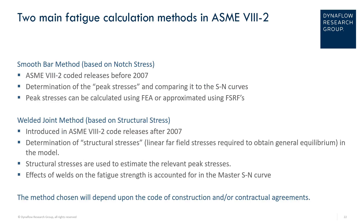This slide introduces the two main fatigue calculation methods in the ASME boiler and pressure vessel code section 8 division 2. The first is the smooth bar method, which is based on the notch stress. This is relevant for all code releases before 2007, and includes the determination of peak stresses and comparing them to the SN curve. The peak stresses can be calculated using FEA or approximated using fatigue strength reduction factors.